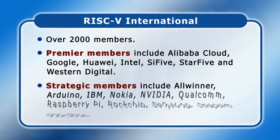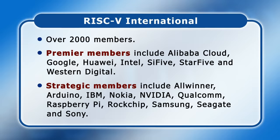Strategic members also include Allwinner, Arduino, IBM, Nokia, Nvidia, Qualcomm, Raspberry Pi, Rockchip, Samsung, Seagate and Sony. So as we can see, there is widespread support for RISC-V development across the computing industry.